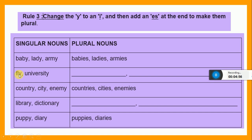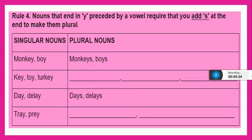Can you make the plural of fly? Fly, flies. University, universities. Country, countries. City, cities. Enemy, enemies. You will make the plural of library and dictionary yourself. You will just change the y into i and then add es.